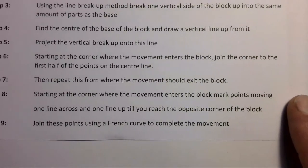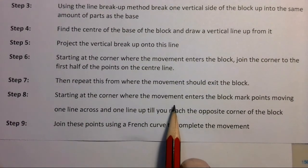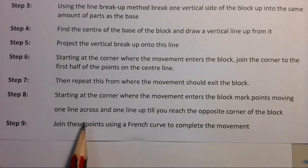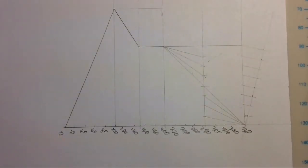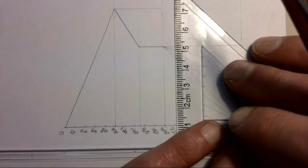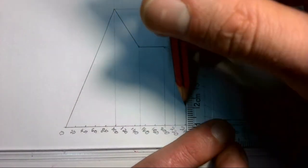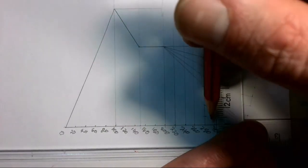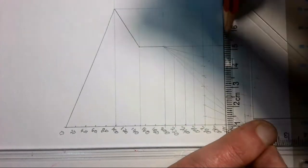Moving to step eight, which says starting at the entry corner, mark points one line across and one line up. But we can't do that yet — there's a step we missed. We must project each of these points straight up into our block. All points need to be projected up into the block.